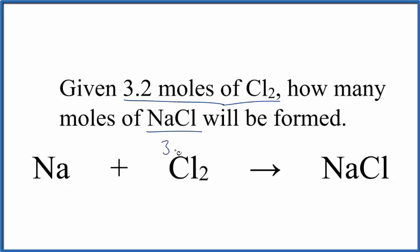So we have 3.2 moles of Cl₂, and we don't know how many moles we have of NaCl. So really it's a mole-to-mole problem. That's what we're trying to find. So to solve this, we need to know the ratio of these substances here.